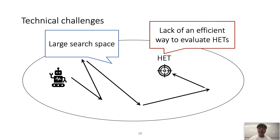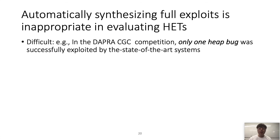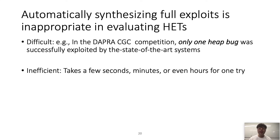Next, we discuss how Rkip efficiently evaluates a potential heap exploitation technique. One way to evaluate is to synthesize a full exploit. However, this is inappropriate. First, automatic exploit generation is a very difficult problem, particularly for heap exploits — in the DARPA CGC competition, only one heap bug was successfully exploited. Second, automatic exploit generation is usually inefficient: one try can take seconds, minutes, or even hours.